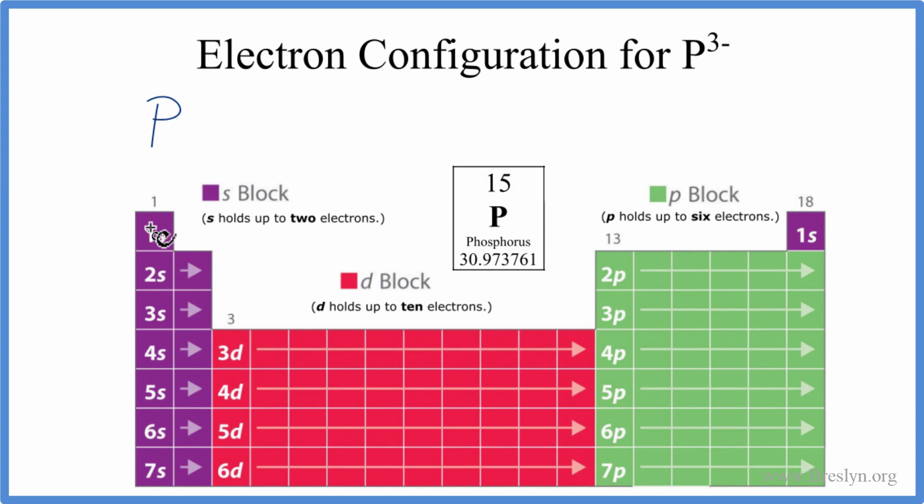So we'll start with 1s. And s can hold up to two electrons. So we have 1s1, 1s2. We'll put the two in there. Then we go to the 2s. We have 2s1, 2s2. We've used four electrons. We have 15 total.